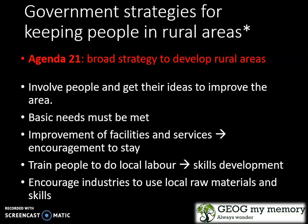Government strategies put in place for keeping people in rural areas include Agenda 21. This is a broad strategy to develop rural areas, involving more people and combining their ideas to improve the area. Basic needs must be met, including facilities and services, which encourages people to stay. Agenda 21 focuses on training people to do local labor, developing their skills, and encouraging industries to use local raw materials and skills.